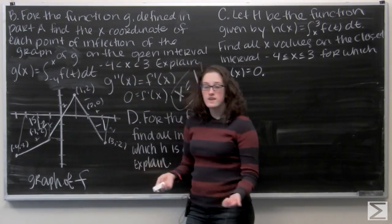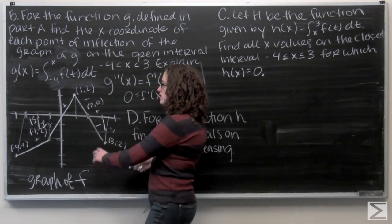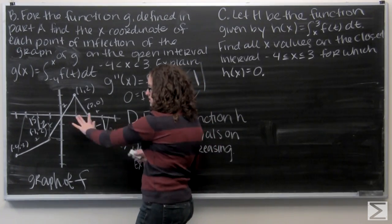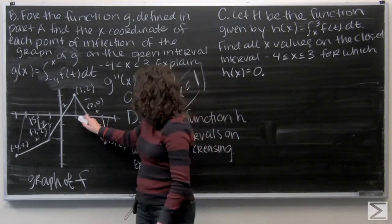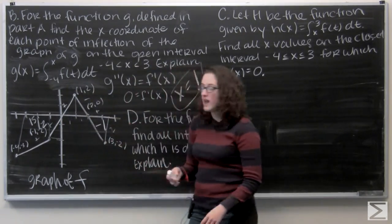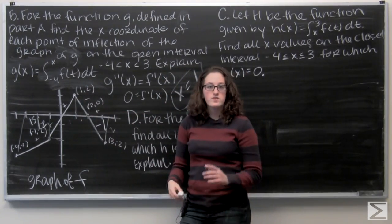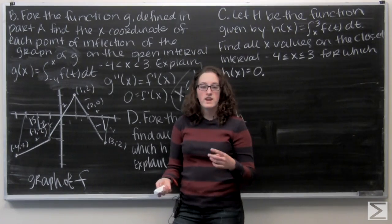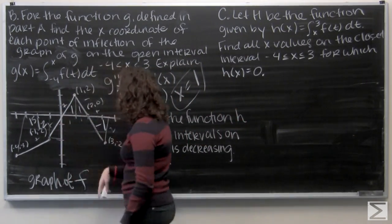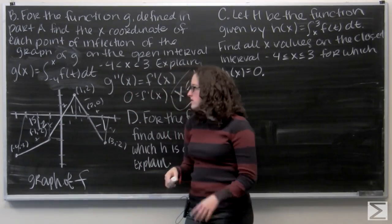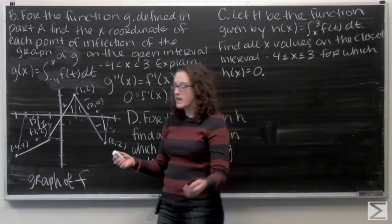The two half-triangles go from two to one and from one to zero, so each has a base of one. They share a height of two because the top point is at one, two. So each of those little half-triangles has an area of positive one. The next small triangle also has a height of two and a base of one, making its area negative one.